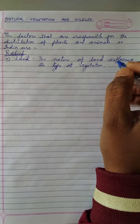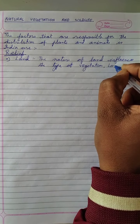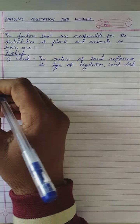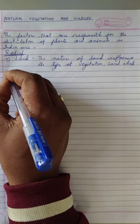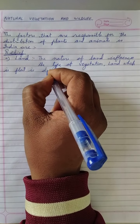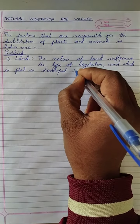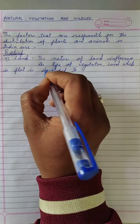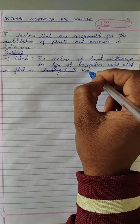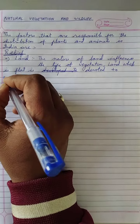The nature of land influences the type of vegetation. Whether it is a flat area, mountainous region, or desert land — flat land is devoted or developed for agriculture.